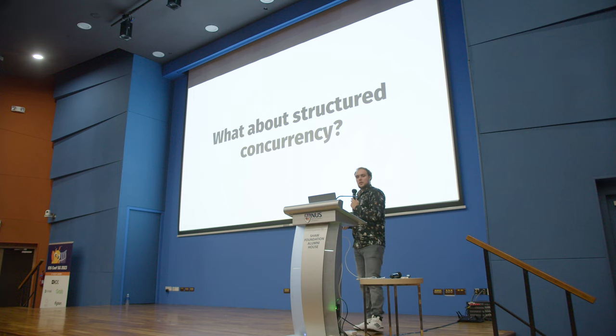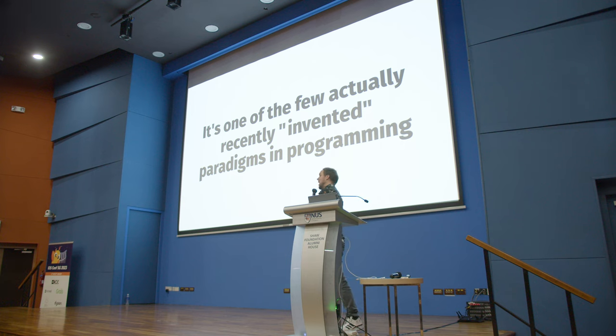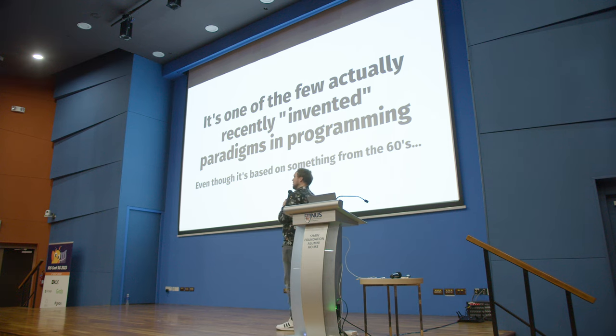I've mentioned unstructured tasks, which implies there's something called structured concurrency. I've left this concept until the end, because I hope that with the information you have now you already know a lot more about how tasks work. It's also important to know what structured concurrency is, because it's an expensive word for a not-too-expensive concept. It's actually one of the few things I found in programming that was invented relatively recently, though it's based on something from the 60s called the fork-join model.